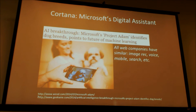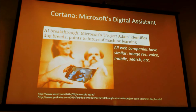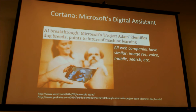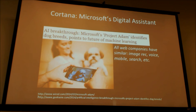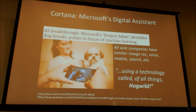There's a funny headline: 'AI breakthrough — Microsoft's Project Atom identifies dog breeds, points to future of machine learning.' If you remember, Google recognized cats and Microsoft recognized dogs. The Wired article said they use a technology called HogWild! — and I was extremely happy they got the exclamation point. The writer expressed she was completely incredulous that anything serious could actually be called HogWild. Of all things, HogWild! — thank god we trolled the universe.